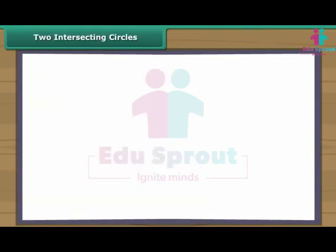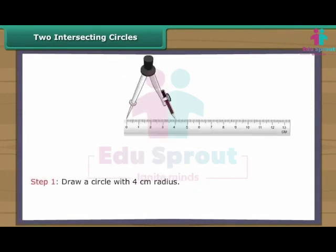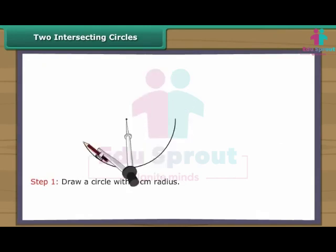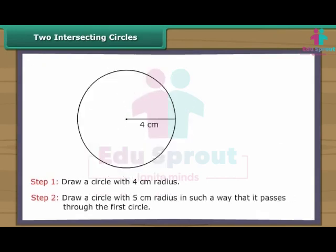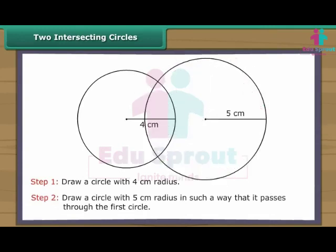Two intersecting circles. Intersecting circles may or may not have the same radius. Let us now draw intersecting circles. Draw a circle with four centimetres radius. Draw a circle with five centimetres radius in such a way that it passes through the first circle. We have two intersecting circles.